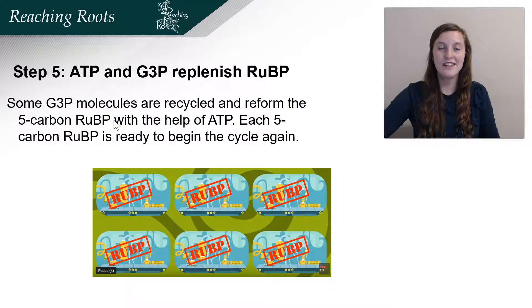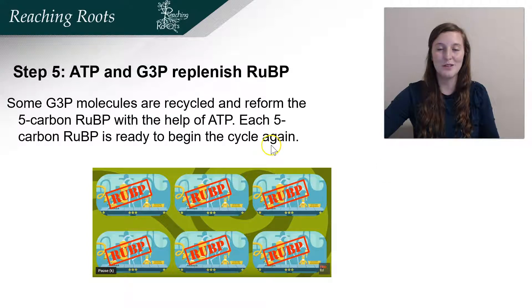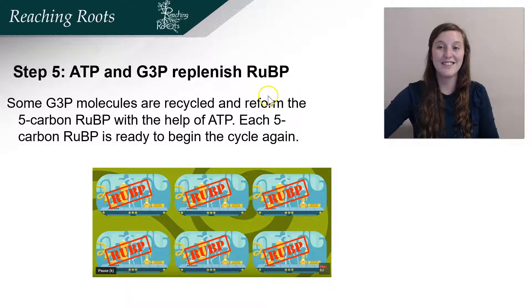This couldn't be possible without the ATP that comes from the light reactions. Each five-carbon RuBP is ready to begin the cycle again, so Rubisco needs to weld those again to carbon dioxide and the cycle continues. It's really important that you remember that RuBP is continually recycled, and this is what makes the process cyclical.